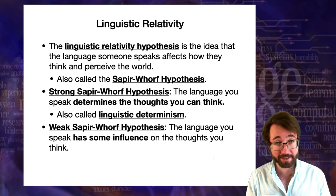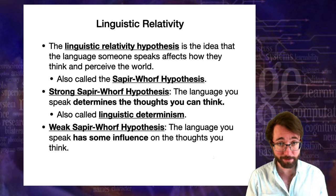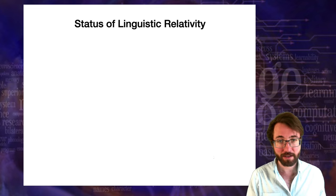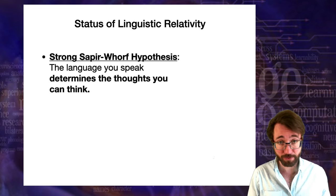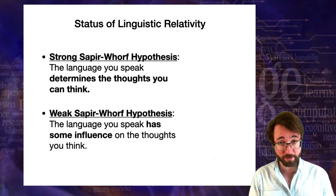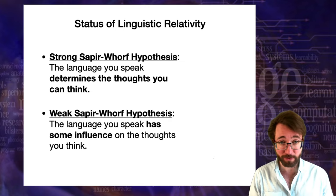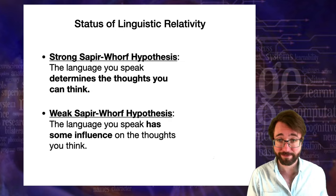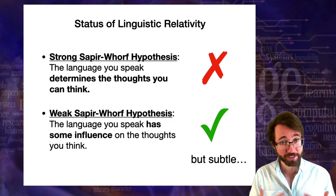And there's the weak Sapir-Whorf hypothesis, which is that the language you speak has some influence on the thoughts you think, but maybe not a dramatic or deterministic influence. The strong Sapir-Whorf hypothesis does not currently have experimental support. The weak Sapir-Whorf hypothesis does have some limited experimental support, and the effects are often subtle. So the strong Sapir-Whorf so far does not appear to be true. Weak Sapir-Whorf does appear to be true, with a lot of asterisks and qualifications.